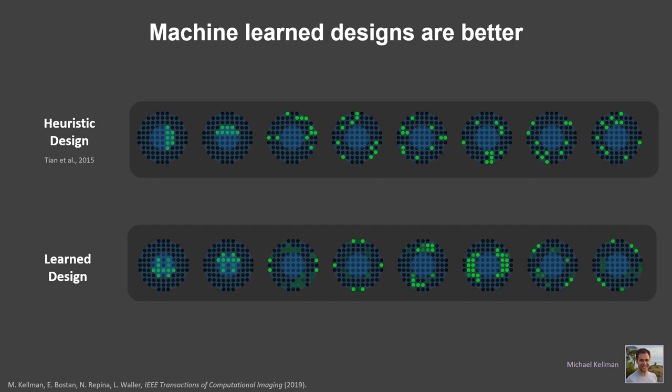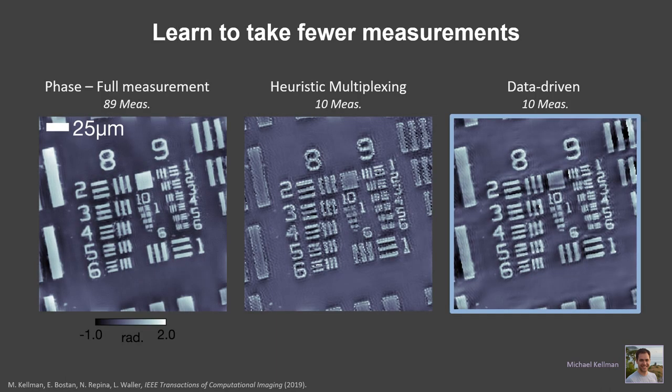These are the heuristic designs versus the learned designs. Very interesting to think about the optics of why it chooses those designs. Here's some reconstructions. If we use our heuristic design with 10 measurements versus our data-driven design with 10 measurements, we can do a lot better with the data-driven design, which was the whole point.